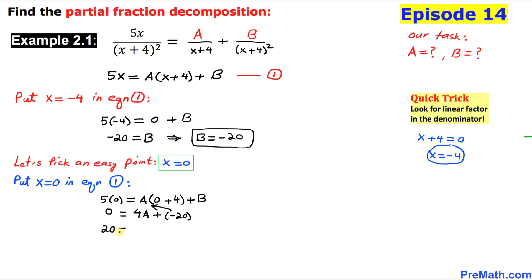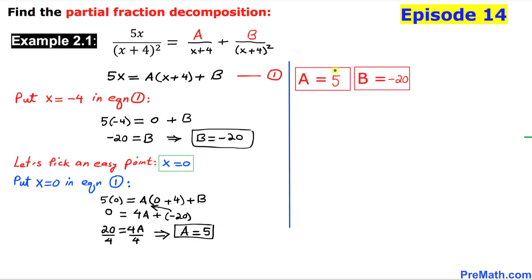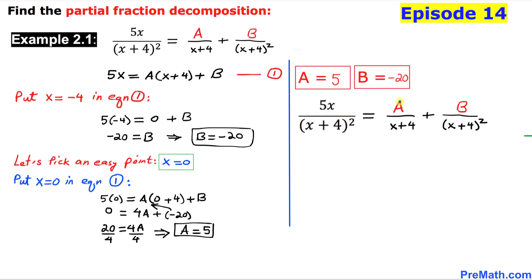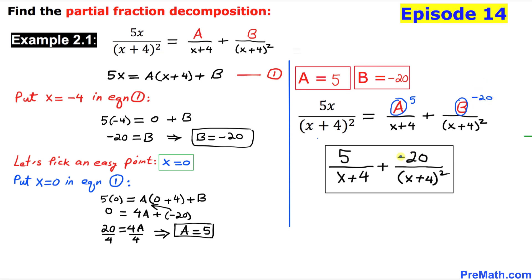We divide both sides by 4 to isolate A, and A turns out to be 5. So our A value is positive 5 and B is negative 20. For our partial fraction decomposition, wherever we see A we replace it by 5, and wherever we see B we replace it by negative 20.